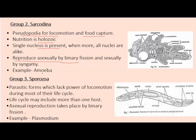The third group is Sporozoa. These are parasitic forms that lack the power of locomotion through most of their life cycle, though at least one motile stage is present. Their life cycle may include more than one host. Asexual reproduction takes place by binary fission. The example is Plasmodium.